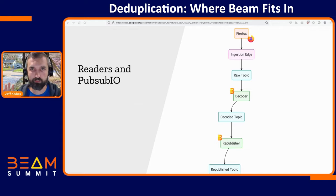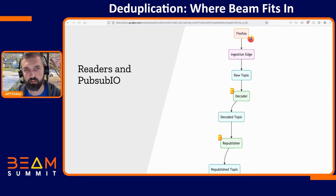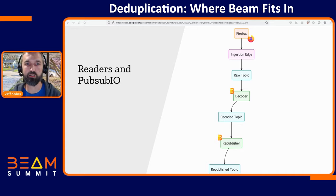Zooming back out to the whole pipeline: we talked about PubSub IO's default behavior, which is helpful for the raw topic to decoder jump and the decoded topic to republisher jump. But what about those initial hops from Firefox to our HTTP edge service and then onto PubSub? Duplicates can happen there too, and it would be nice to detect identical messages regardless of where the duplicate was introduced — just handling the PubSub-to-Dataflow case is not enough.